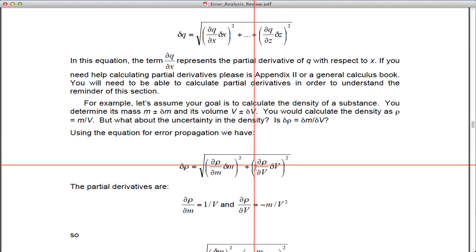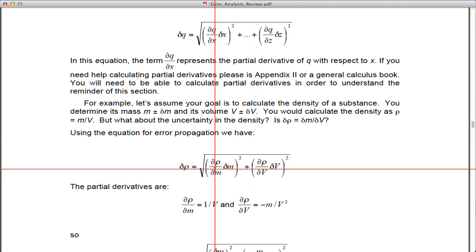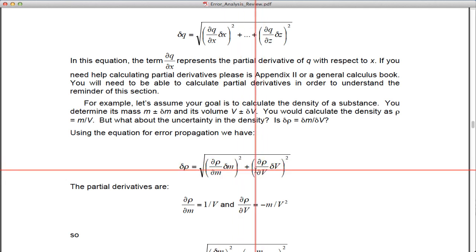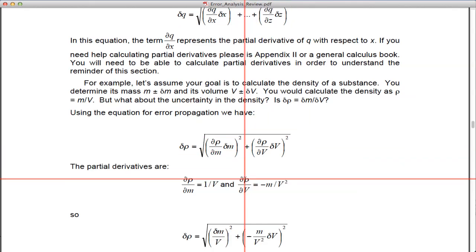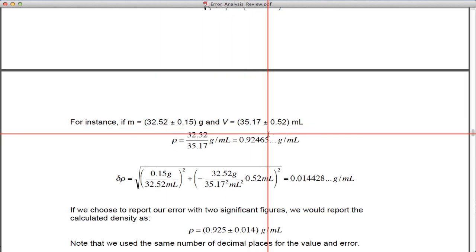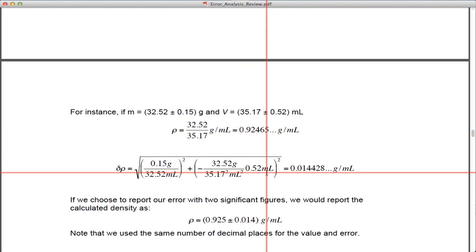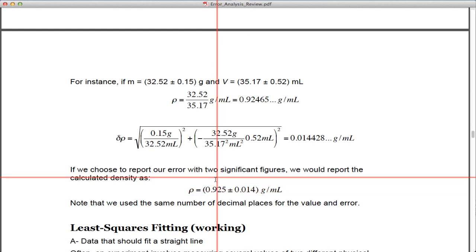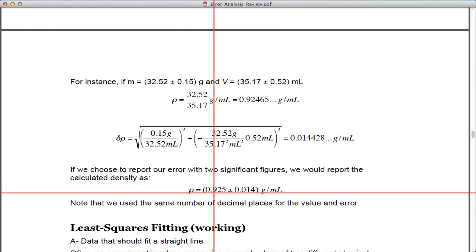I show an example here where we can take the partial derivative of density with respect to mass and the partial with respect to volume, multiply by each of the associated errors in the mass and the volume, take the square of the whole thing, the square root, and then you're able to determine an associated error with that. Then you can report that. So if I was given a specific mass of 32.52 grams and a volume of 35.17 milliliters, I can get a gram per milliliter density, which is 0.925.